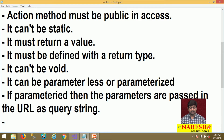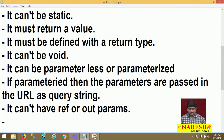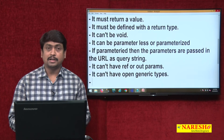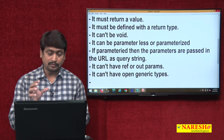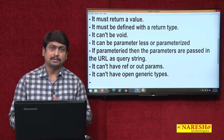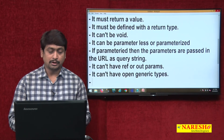Another restriction about controller action methods: they cannot have reference or out parameters. Controller action methods cannot have reference and out parameters. Additionally, they cannot have open generic types — controller action methods cannot have open generic types and should use non-generic types. The return type should be strongly typed; you cannot use open generic types when working with controller action methods.